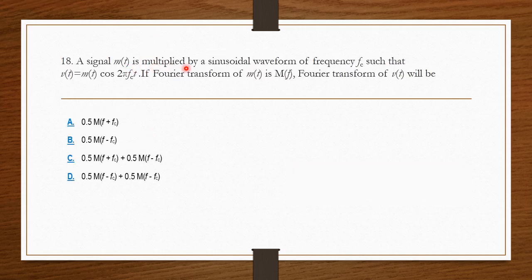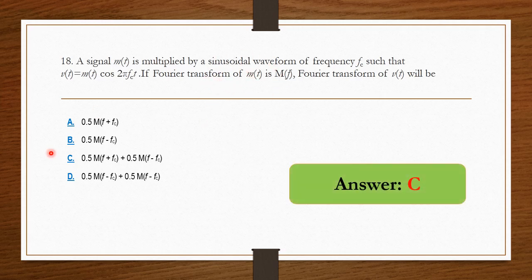A signal m(t) is multiplied by a sinusoidal waveform of frequency fc such that v(t) = m(t) · cos(2πfc·t). If the Fourier transform of m(t) is M(f), then using the modulation property, the Fourier transform of v(t) is option C: (1/2)M(f + fc) + (1/2)M(f − fc).